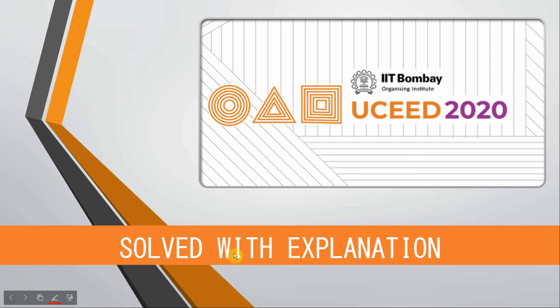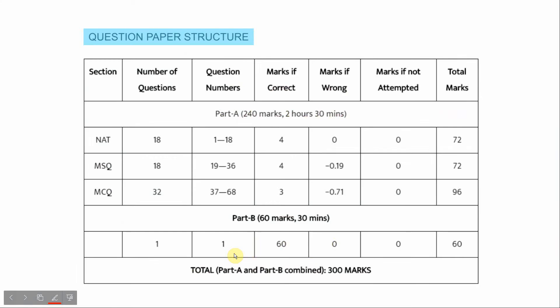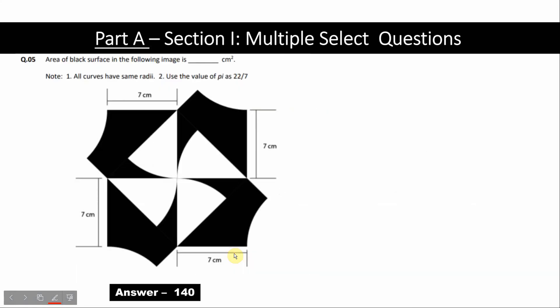Hey guys, what's up. Part A, Question 5: we need to find the area of the black surface in the following image. Note: all curves have the same radii. Also, use the value of pi as 22 by 7.